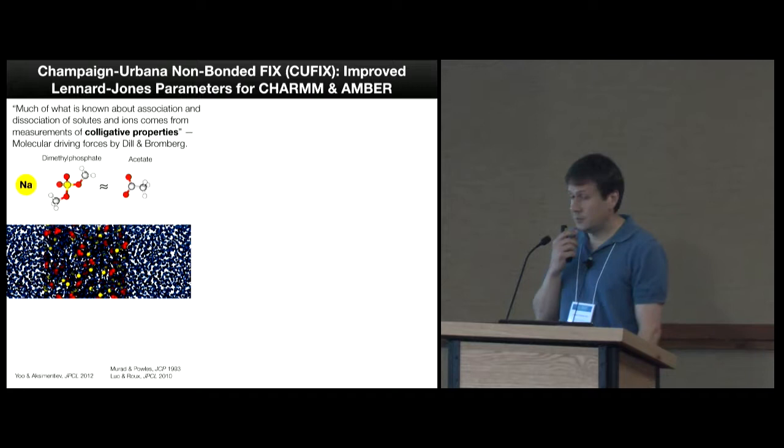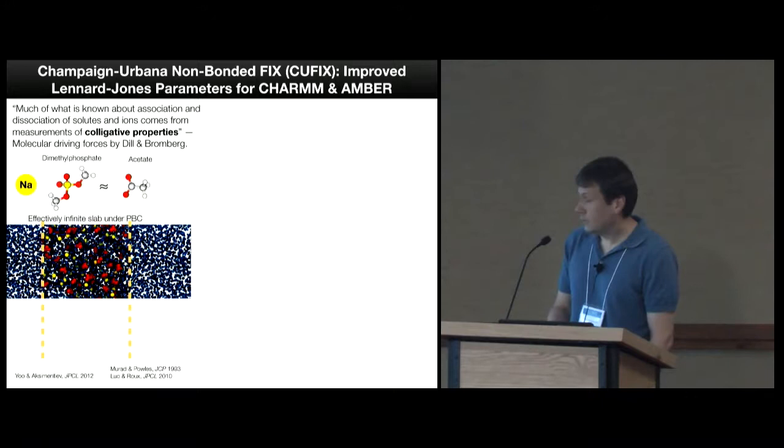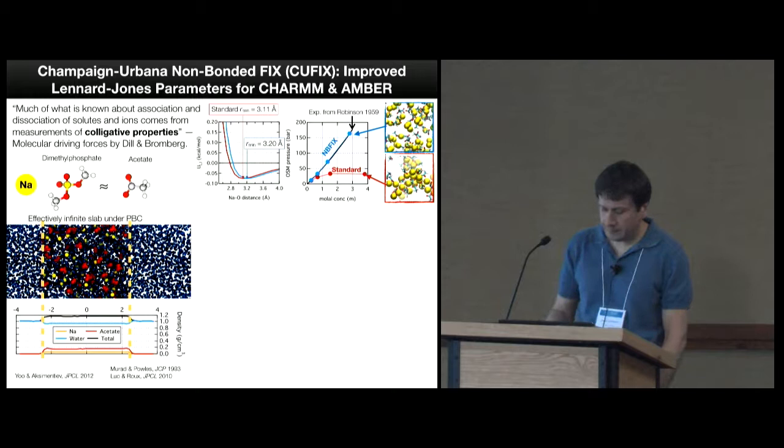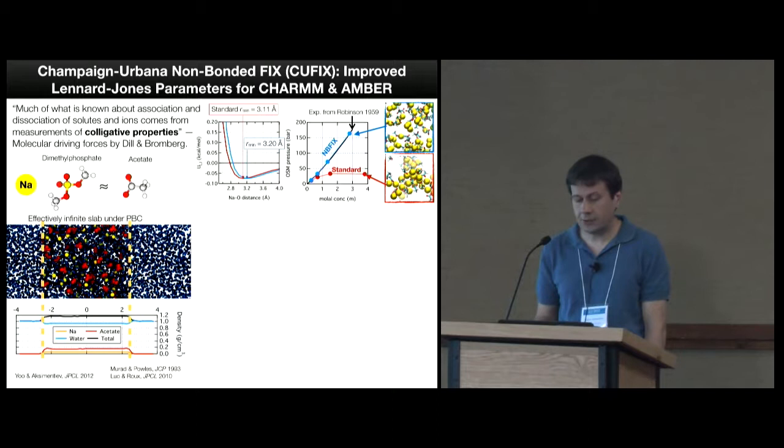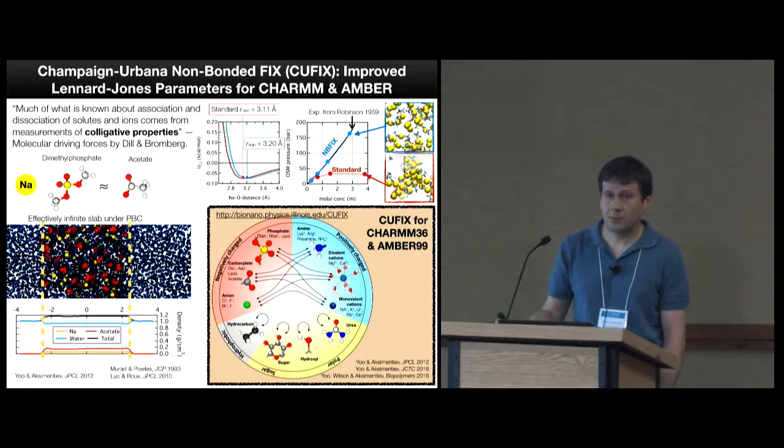The way we did it, we introduced custom surgical corrections to specific atomic pairs. We designed a simulation system that mimics osmotic pressure experiments. So we can match precisely calibration of our model to what is measured in experiment. Once we do that, we will find that suddenly all this clustering of ions disappears. And we get very nice dispersed system. We have done it for many types of molecular interactions, which now is summarized in the so-called CUFIX, which stands for Champaign-Urbana-FIX for molecular dynamics force fields, which covers pretty much every charge-charge pair in the biomolecules.